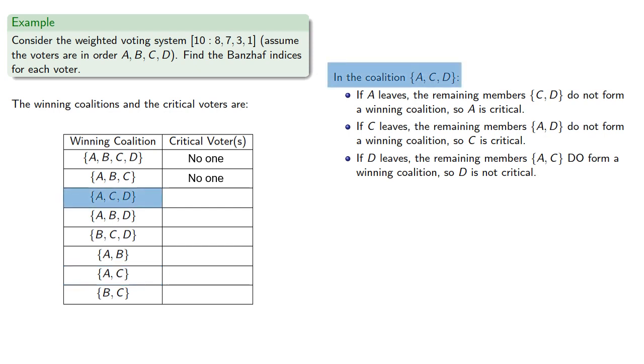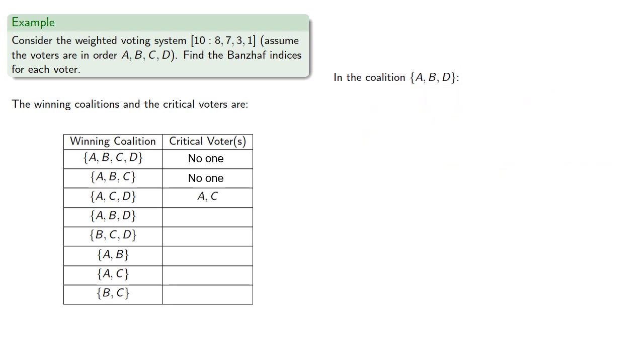So for the coalition A, C, and D, the critical voters are A and C. Similarly, for A, B, and D, we can find the critical voters.